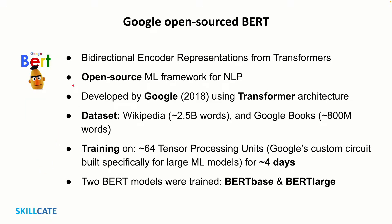BERT, which stands for Bidirectional Encoder Representation from Transformers, is an open source machine learning framework for natural language processing developed by researchers at Google in the year 2018. The BERT framework was specifically trained on the whole Wikipedia, which is 2.5 billion words, and Google Book Corpus, which is around 800 million words. These large informational data sets contributed to BERT's deep knowledge, not only of the English language, but also of our world.